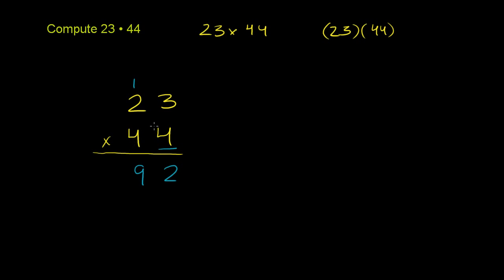So you can think about it as 4, this 4 right here, times 23 is 92. That's what we just solved for.